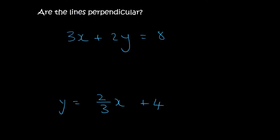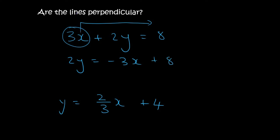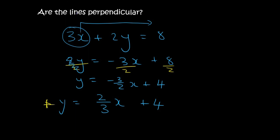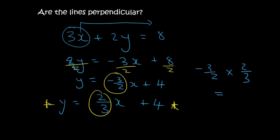For the next one, step one is to get the equation into standard form. Take the 3x over to get 2y equals negative 3x plus 8, then divide everything by 2 to get y equals negative 3 over 2x plus 4. The bottom equation is already in standard form. We multiply the two gradients and get minus 1, so these lines are perpendicular.